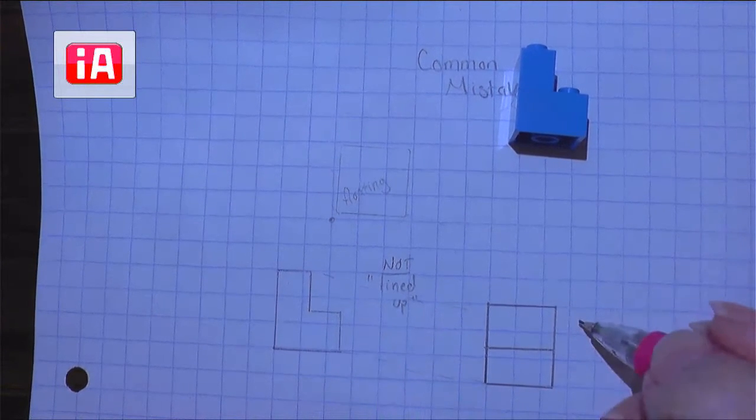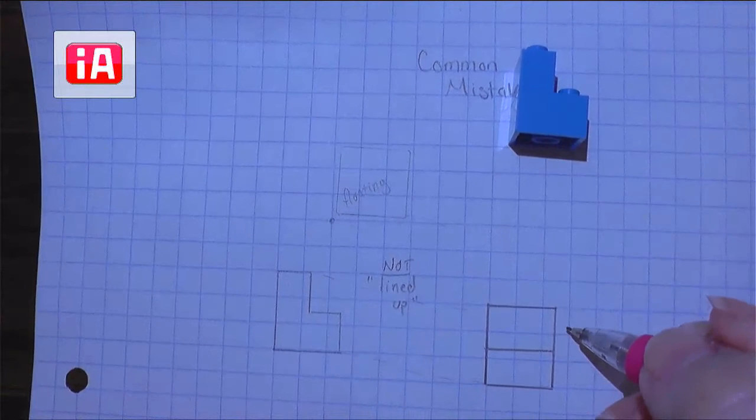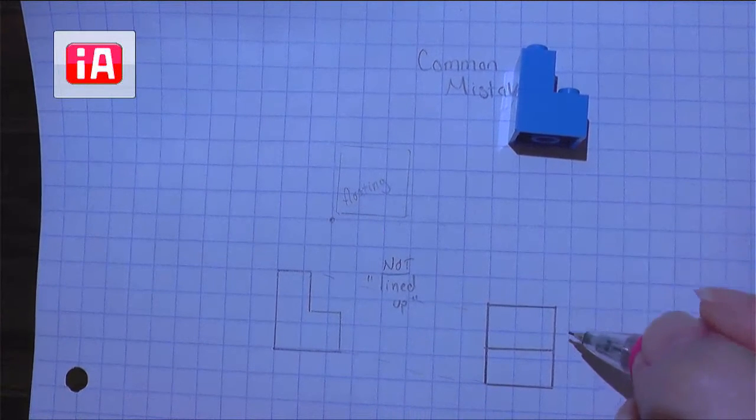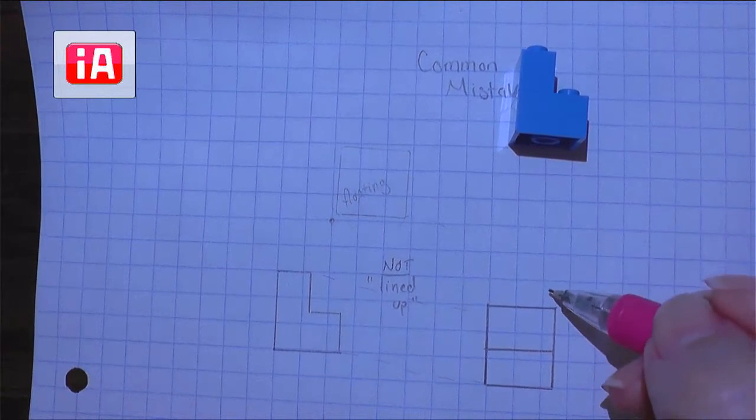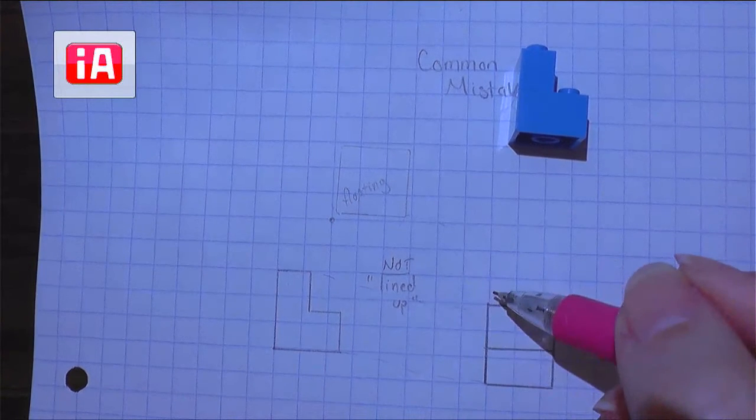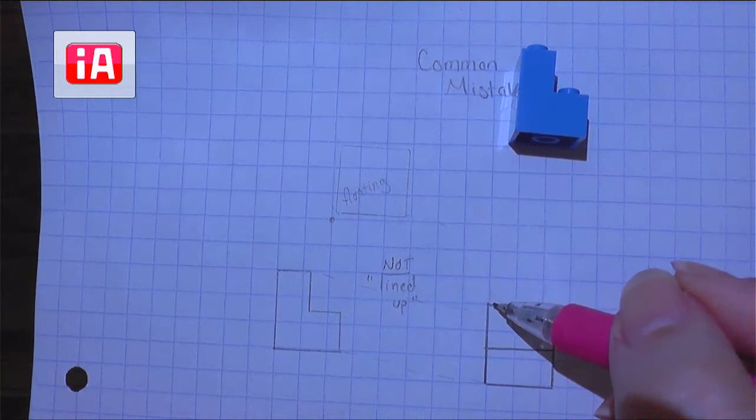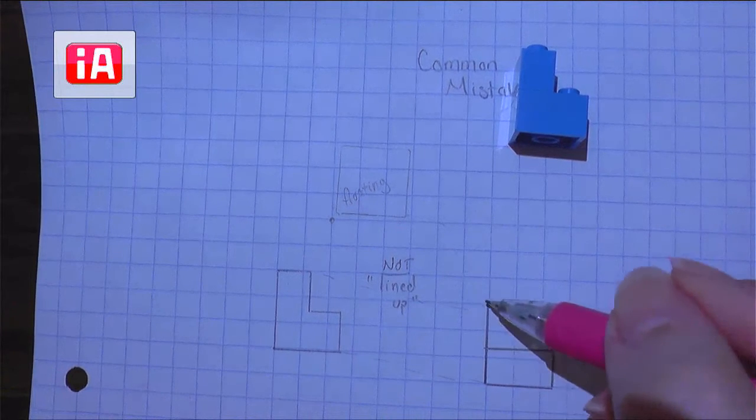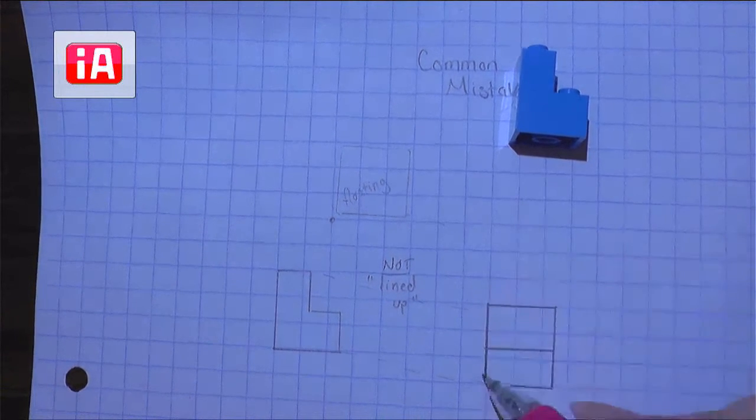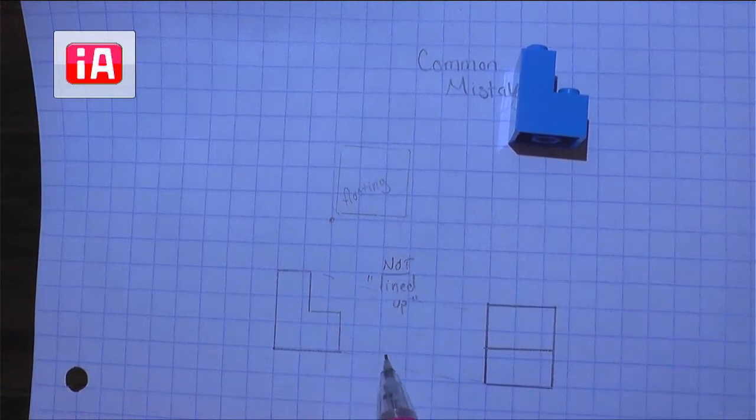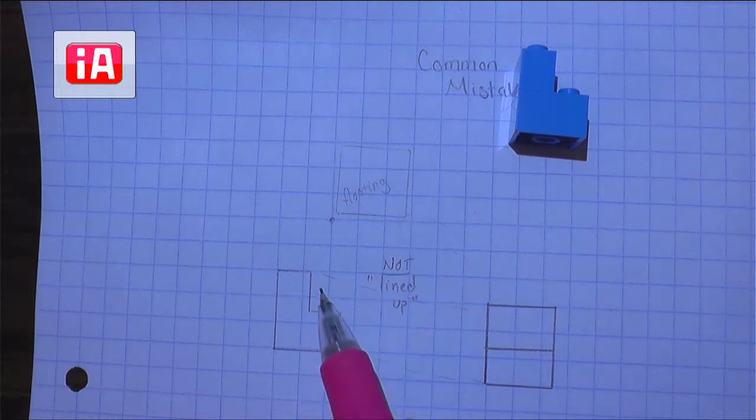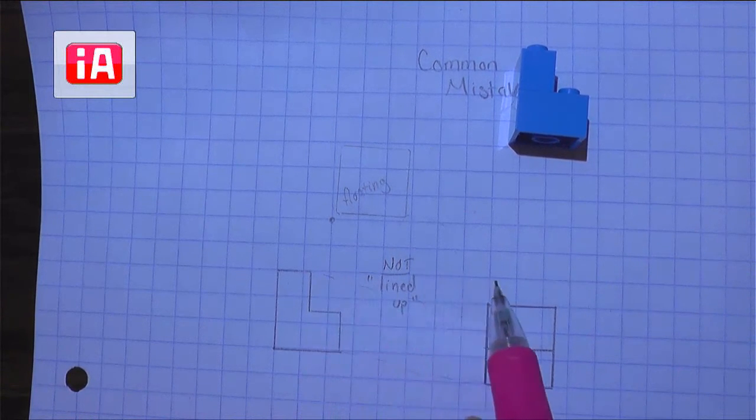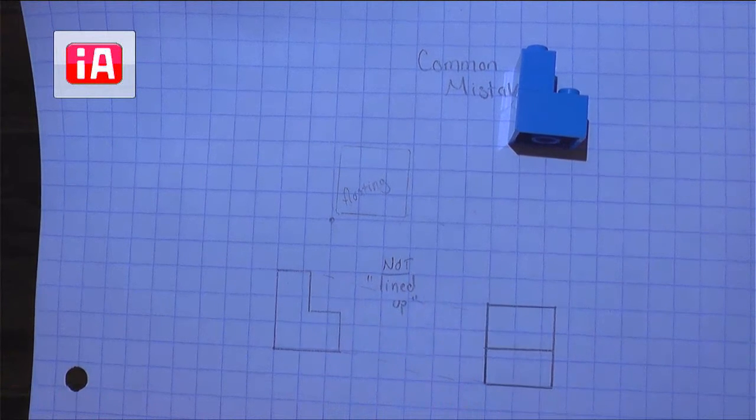So even though the measurements for this are correct, you would actually lose a couple of points because you'll see in the rubric that we want your views to be lined up with each other. So in order for me to get full credit for this, I would have to erase it and redraw it so that the bottom line was on the same graph paper line as the bottom of my front view, and the top line was on the same graph paper line as the top of my front view.